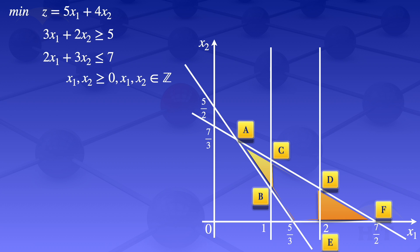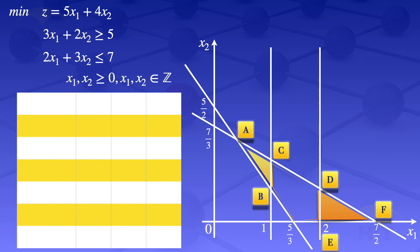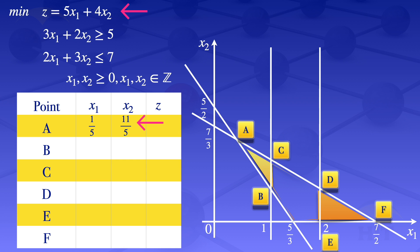I draw a table to evaluate the objective function at the new corner points A through F. At point A, x1 equals 1 over 5 and x2 equals 11 over 5, giving z equals 49 over 5. At point B, x1 equals 1. Substituting x1 equals 1 into the first constraint gives x2 equals (5 minus 3) divided by 2 equals 1. Substituting these values gives z equals 9.